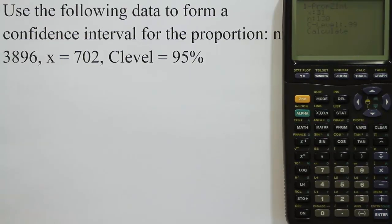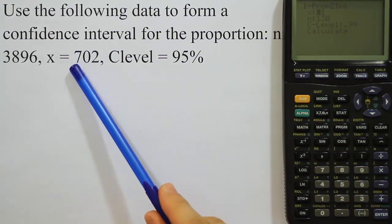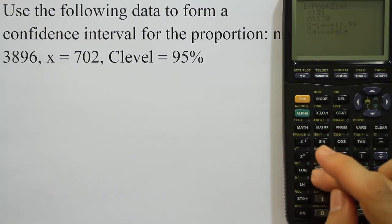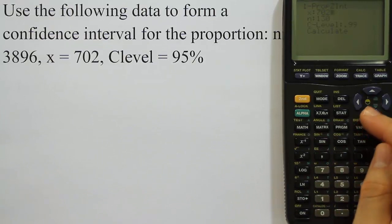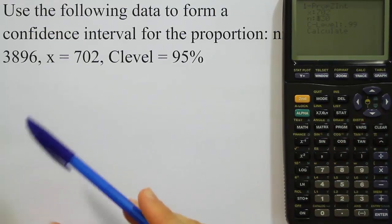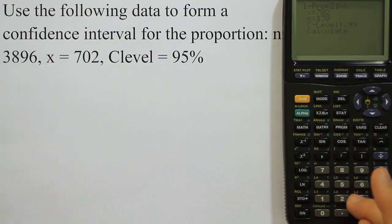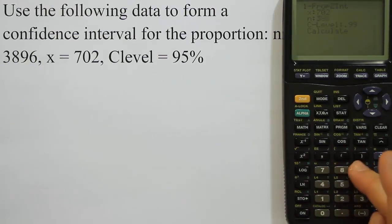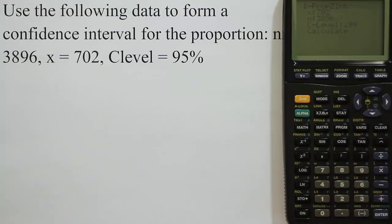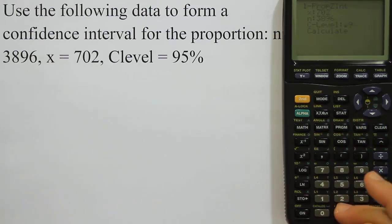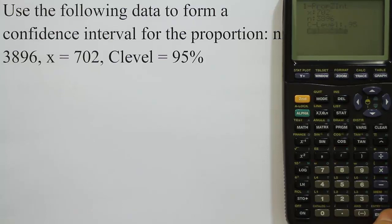The first thing it asks us for is the x value. So our x value is 702. So 702. And then from there, it's going to ask for the n. The n is 3,896. So we'll do 3,896. And then from there, the last thing it wants is the confidence level, which is 0.95. So I'll enter 0.95 in the calculator. Then we hit enter, and then enter one more time to calculate it.